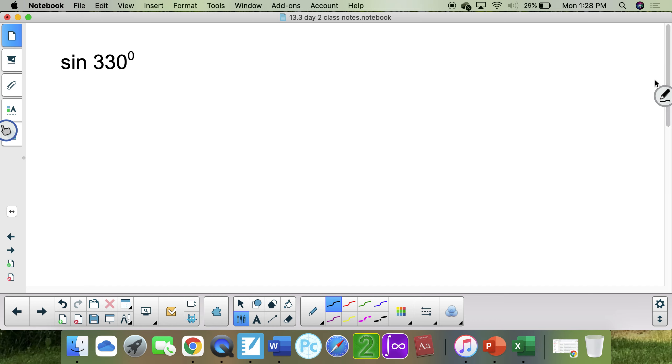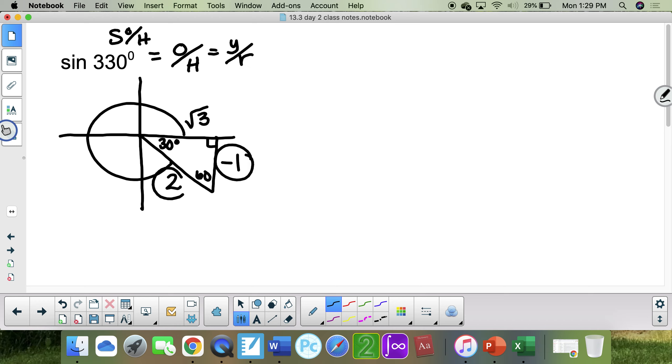What's the sine of 330? This needs to be at 30 then. This is 60. Opposite of 30 is negative 1. Opposite of 60 is root 3. And 2. Sine is opposite over hypotenuse. It's s-o-h, or it's y over r. This is the y, and this is the r.